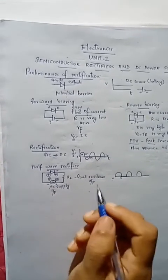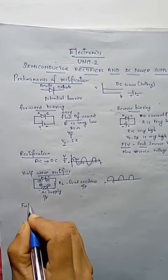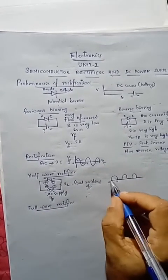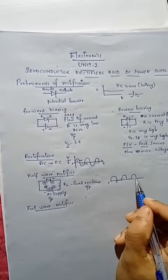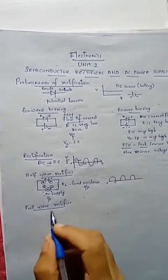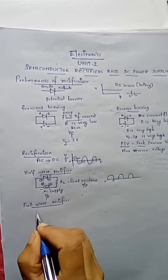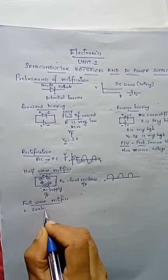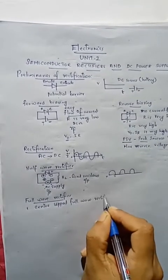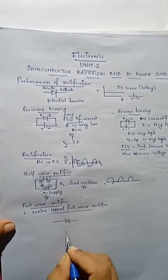We are dealing with the next type of rectifier, that is the Full Wave Rectifier — specifically the Center Tapped Full Wave Rectifier. In this circuit, we are using two diodes.